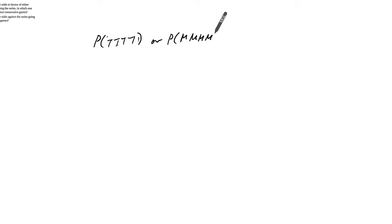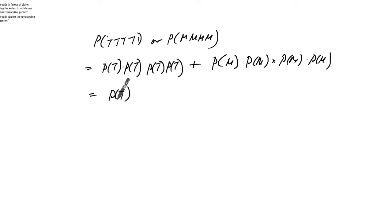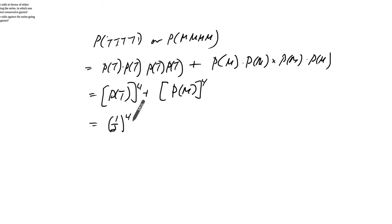The Maple Leafs winning four games in a row, or Montreal winning four games in a row — that's the probability of Toronto winning four times plus the probability of Montreal winning four times. So Toronto winning to the power of four, Montreal winning to the power of four: that's one half to the power of four plus one half to the power of four. That's one over 16 plus one over 16, which is two over 16, or one over eight.